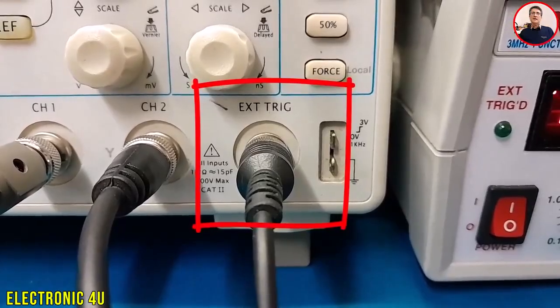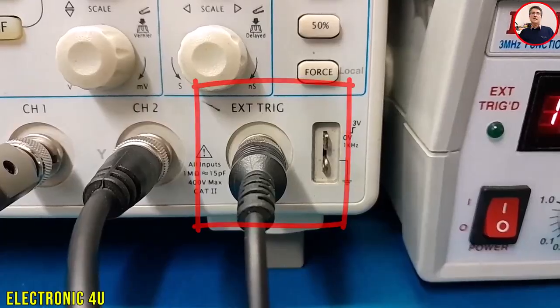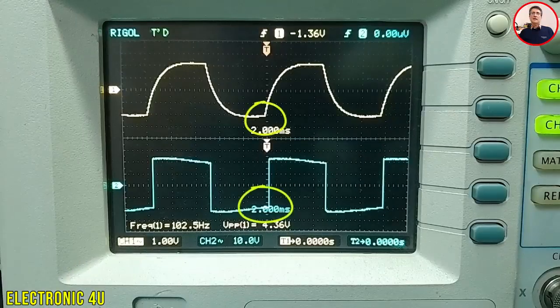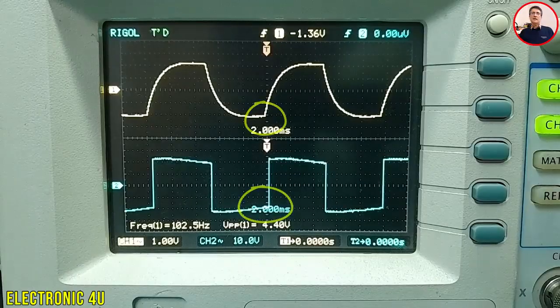We use an external trigger when we want to synchronize the waveform with a different reference signal. This is essential for accurately analyzing how a circuit responds to a specific input.